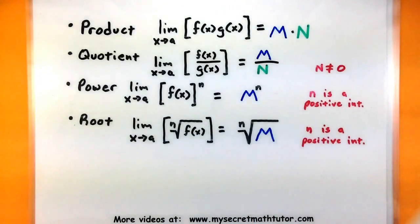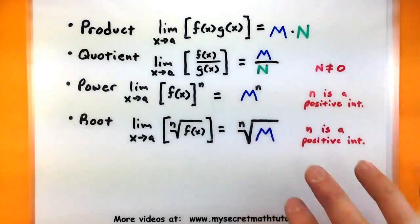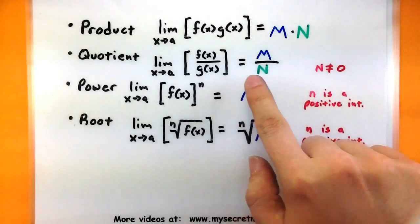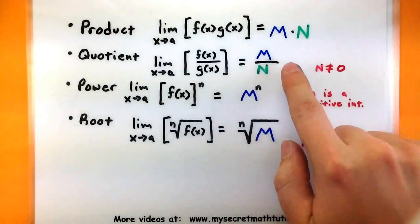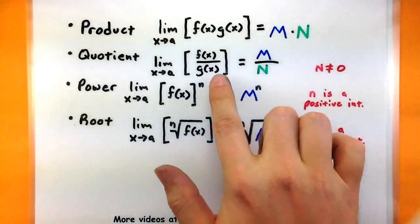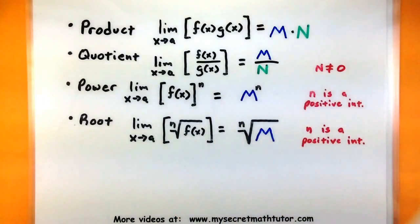So, again, these things work very intuitively. The operations of how the functions are being put together is also what we'll do with their individual limits. Now, there are a few extra restrictions in some of these laws. And they just basically make sure that all the other rules of mathematics are being followed. For example, in the quotient rule, we definitely take the quotient of the two limits. We divide them. But we can only do this as long as the bottom limit is not zero. That just provides a way to make sure we are not dividing by zero at any time.